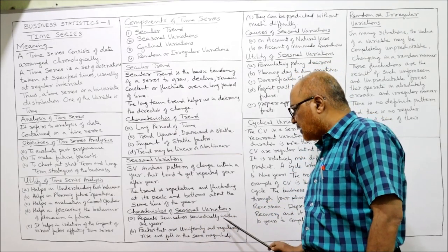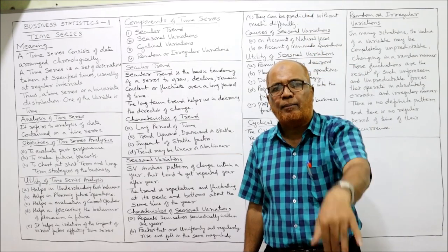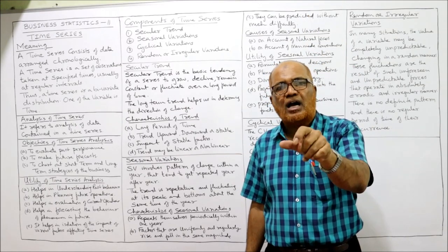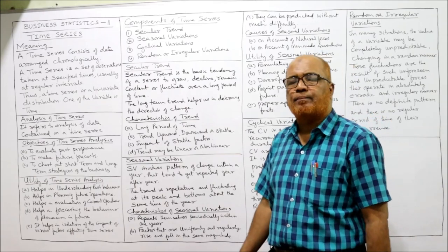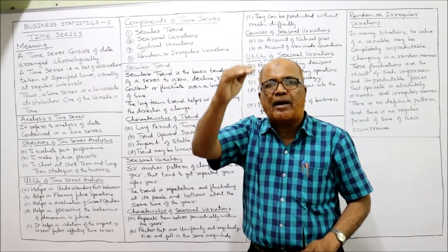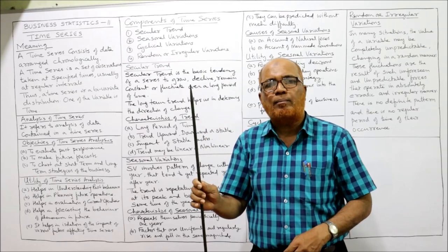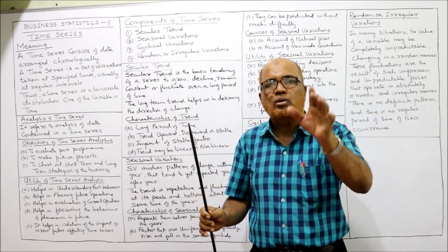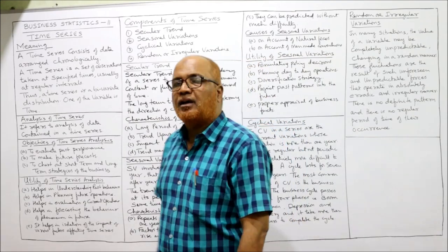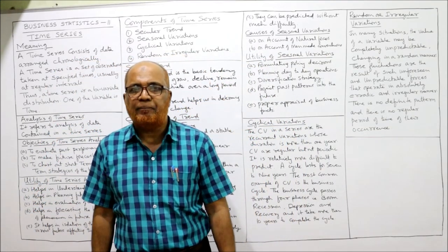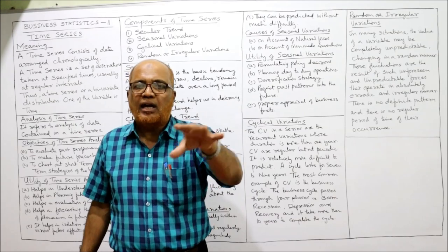Characteristics of seasonal variations: first, they repeat themselves periodically within one year — the changes go up to peak and come down to bottom, and this repeats every year. Second, the factors that uniformly and regularly rise and fall in the same manner — the factors affecting the up and down are the same every year. For example, during monsoon the sale of umbrellas increases because there is rain and people require umbrellas — the factors are the same. Third characteristic: they can be predicted without much difficulty.